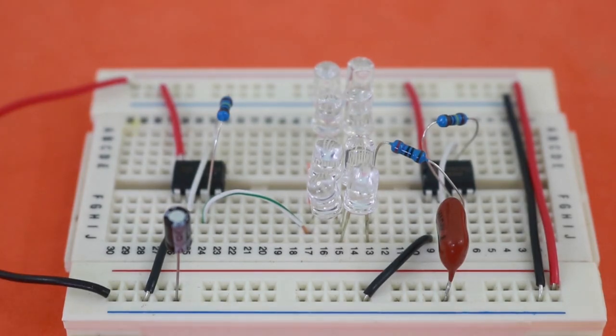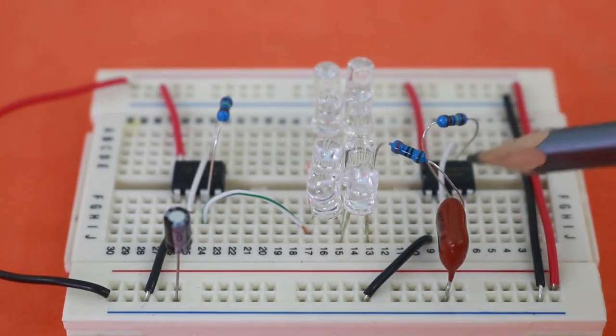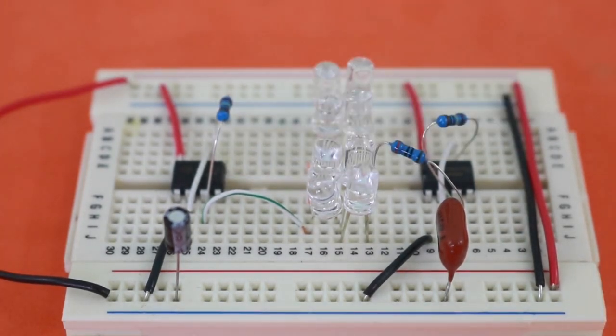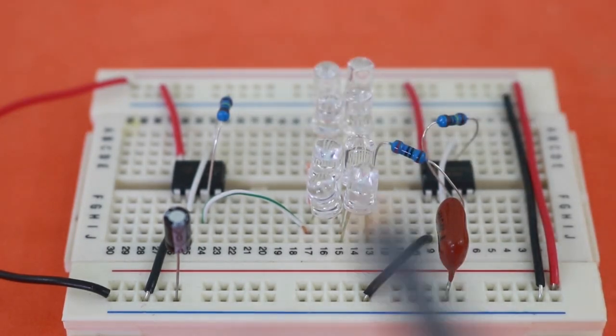In order to build the circuit you only need two 555 timers, three resistors, a couple of capacitors, and of course the LEDs.